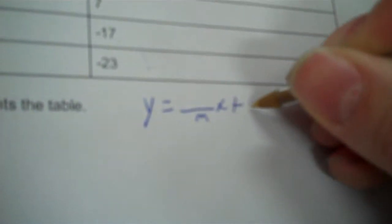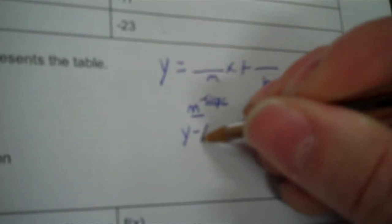Writing a linear function is the same as writing a linear equation based on the table. We're going to write it in the form of y equals mx plus b. We have to find the m and we have to find the b. M is the slope and b is the y-intercept. Now slope is y minus y over x minus x.